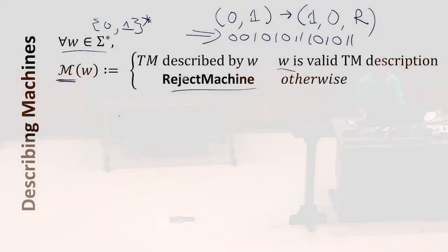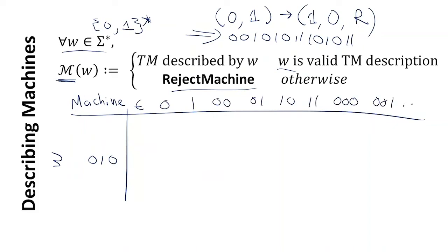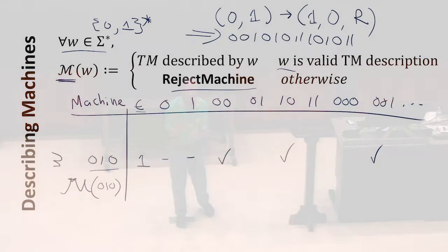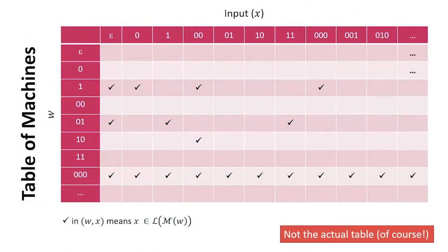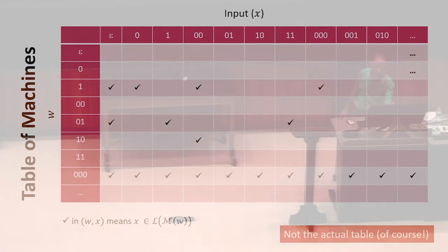If we want to describe machines — we've got a machine represented by some string w. That machine defines a function, and we can write that function as a lookup table. On every input string — we can order the input strings — we look at its output on every one of those strings. If the machine represented by some string on a given input outputs one, we put a one; if it does something else, we put a dash. Either it accepts the input or it doesn't, and we put a check where it accepts. It's an infinite table, but we can imagine writing it down.